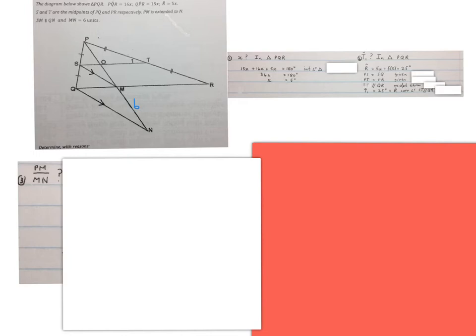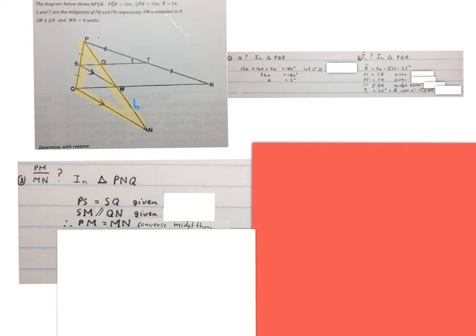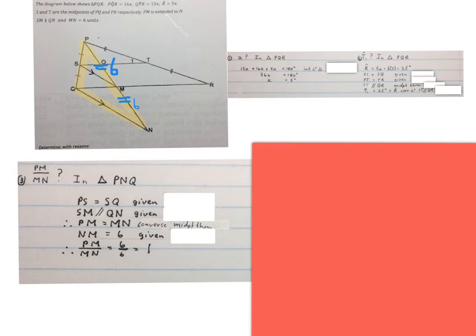Next they ask us to work out the ratio of PM over MN. So we write in triangle PNQ, the yellow triangle now. PS is equal to SQ, given. SM is parallel to QN, they indicated it on the lines for us. Therefore PM equals MN, converse midpoint theorem. Then you write NM equals 6, it was given in the beginning there. So PM over MN will be 6 over 6, and that equals 1.